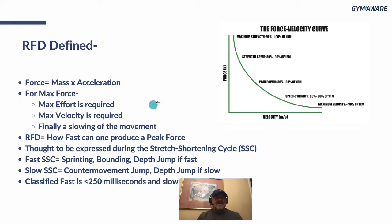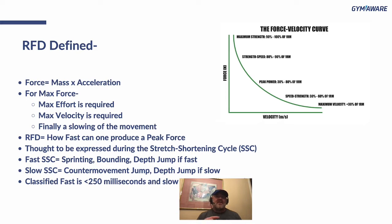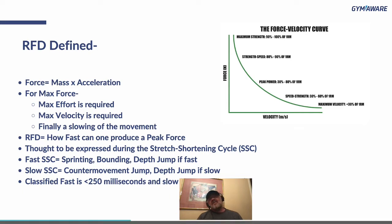A slow SSC would be a countermovement jump or a depth jump if you're not good at it. To classify it: movements that take less than 250 milliseconds — when your foot strikes the ground or the transition from stretch to force production — are fast SSC. You've probably heard the term ground contact time. A slow contraction is going to take 250 milliseconds or more.